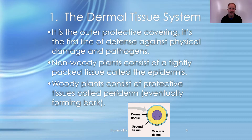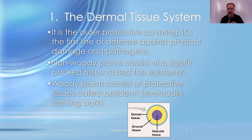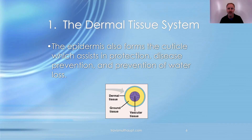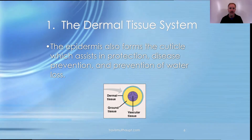Non-woody plants have a stem that's tightly packed — think of a piece of broccoli with that thick hard stem and waxy exterior. Woody plants have solid wood in the middle and a protective periderm on the outside, which eventually becomes the bark. The surface of a leaf has an epidermis that forms a cuticle, providing protection against water loss and disease.